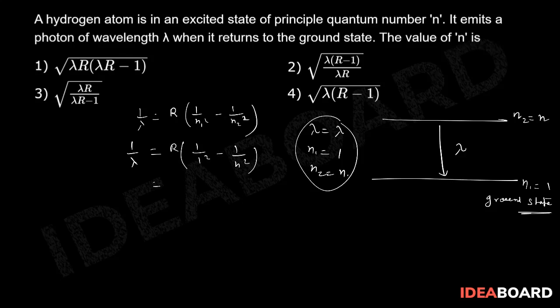Now we want to get the value of N. For that, 1 upon lambda R 1 minus 1 upon N square. 1 upon N square is this side: 1 minus 1 upon lambda R. I can take LCM, this will be lambda R minus 1 upon lambda R.